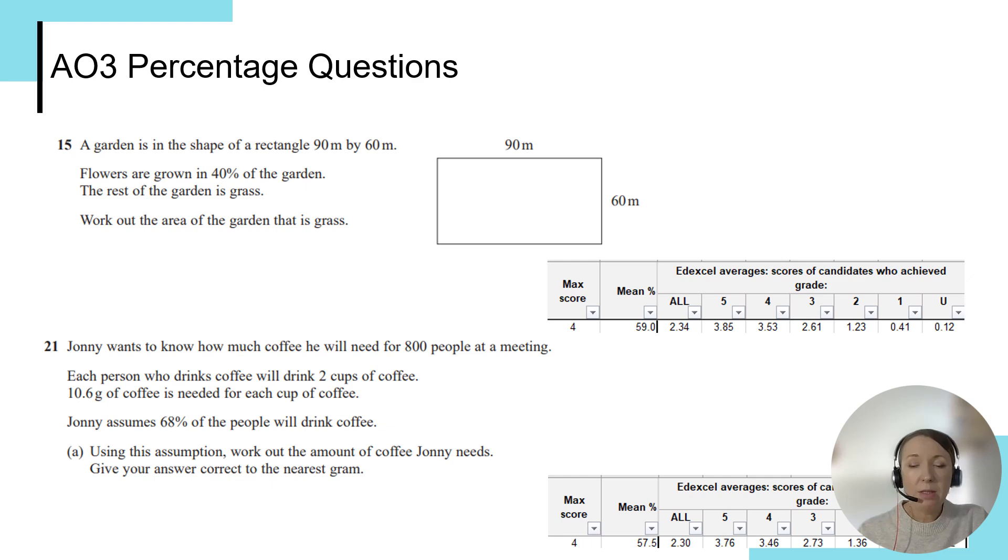We mentioned AO3 percentage questions and here are two examples of the type of questions that we mean. We've got question 15 from June 2019 paper 2 and question 21 from June 2023 paper 3, and what we see here is there's a really clear distinction between students who went on to achieve a grade 2 and those who go on to achieve a grade 3. For example, in question 15 our grade 2 students scored on average 1.23 out of the 4 available marks, whereas for grade 3 students they were successful in achieving on average 2.61 out of the maximum of 4 marks.